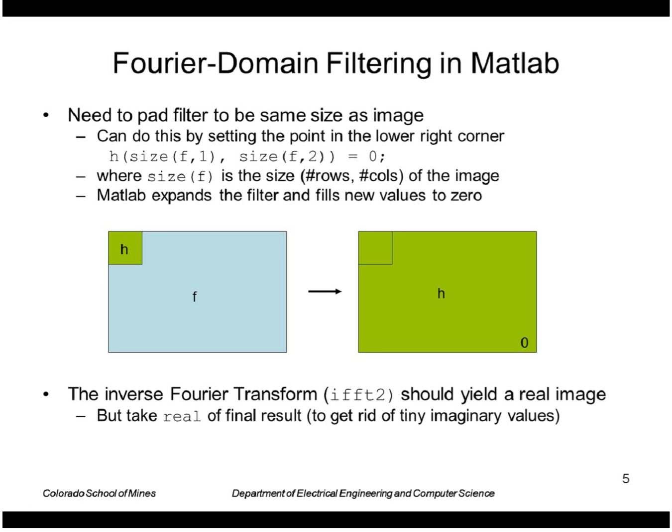When you take the inverse Fourier transform to get the final result, the results should be real but there may be some tiny imaginary values due to machine precision. You can take the real of that to eliminate those.